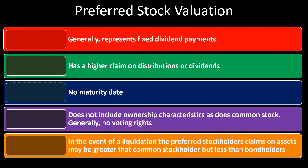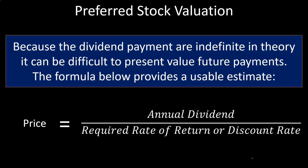In the event of liquidation, the preferred stockholder's claim on assets may be larger than the common stockholder's, but less than the bondholders'. If the company were to close and liquidate, bondholders have the best position, followed by preferred stockholders, and then common stockholders — unless government intervention changes things. But that's the general rule.